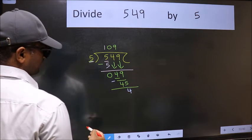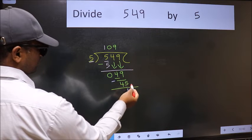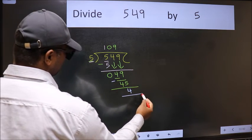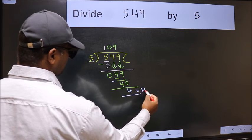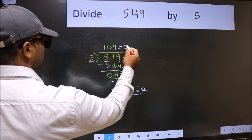We get 4. No more numbers to bring down, so we stop here. This is our remainder and this is our quotient.